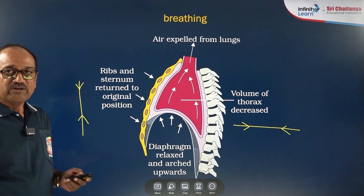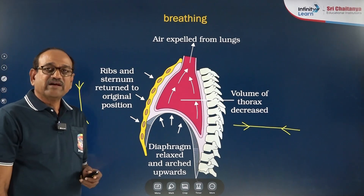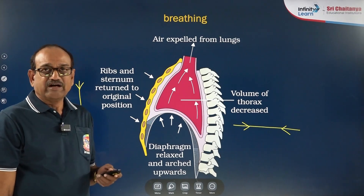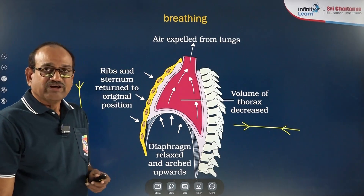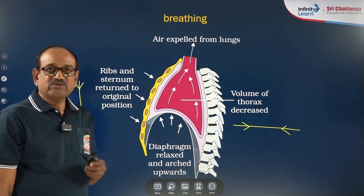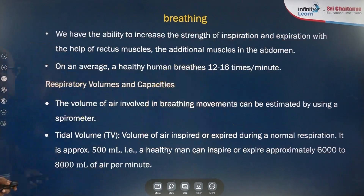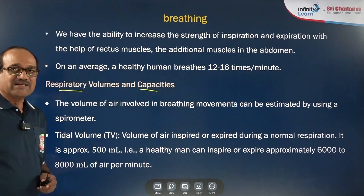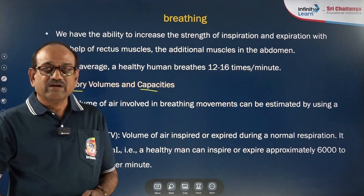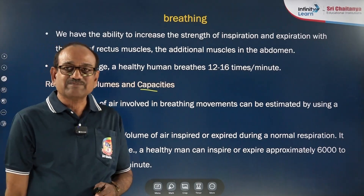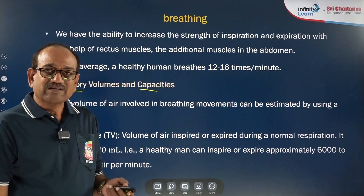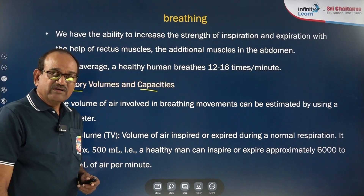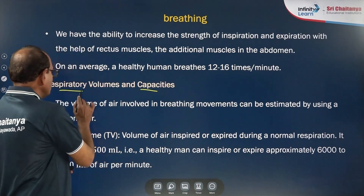Inspiration and expiration together are known as breathing. For a healthy person, it is almost between 12 to 16 breaths per minute. We can also increase the strength of this breathing activity by using certain additional muscles. Respiratory volumes can be measured by using a device known as a spirometer, short for respirometer. By using a spirometer, we can calculate the respiratory volumes.